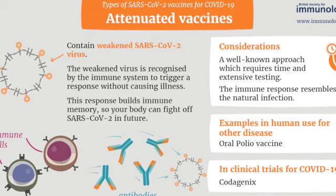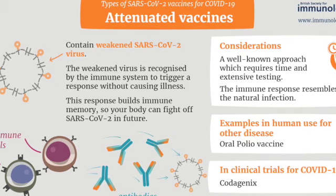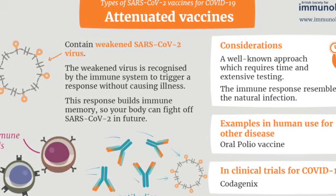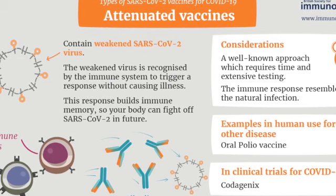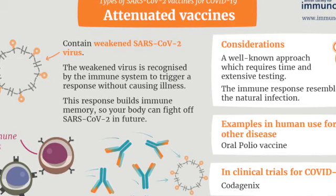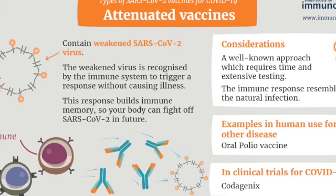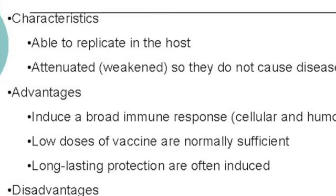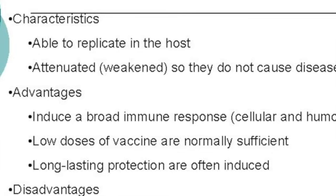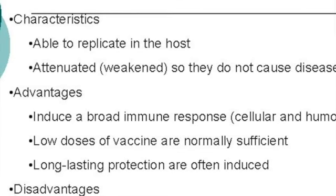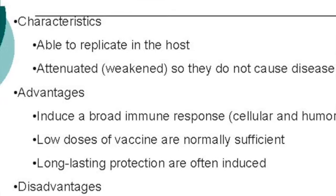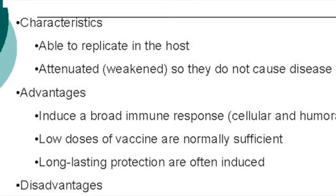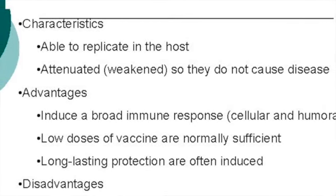But live vaccines also have some limitations. For example, because they contain a small amount of the weakened live virus, some people should talk to their health care provider before receiving them — such as people with weakened immune systems, long-term health problems, or people who had organ transplants. They also need to be kept cool, so they don't travel well and can't be used in countries with limited access to refrigerators.